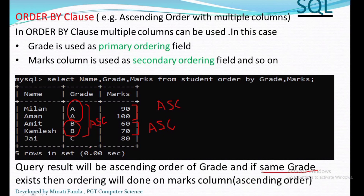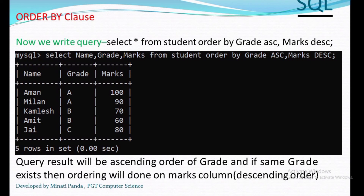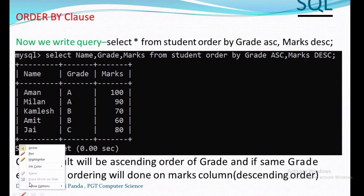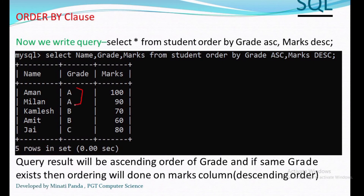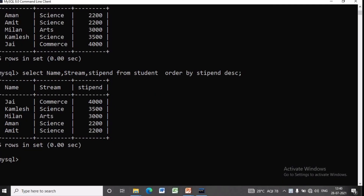We can also change the order type for each column. Here, if we want grade ascending and marks descending, we write: SELECT name, grade, marks FROM student ORDER BY grade ASC, marks DESC. The query result will first sort by grade ascending, and if the same grade exists, ordering will be done on marks in descending order. As you can see, two S grades have marks arranged in descending order — 100 then 90. Similarly for B: 70 then 60.